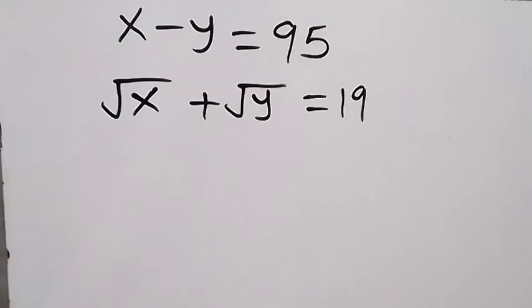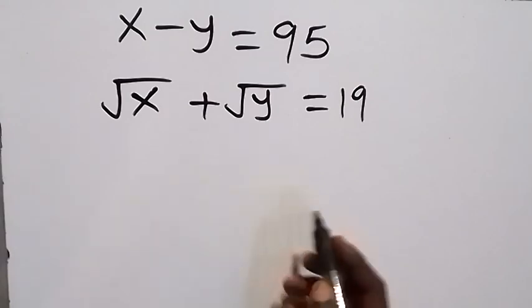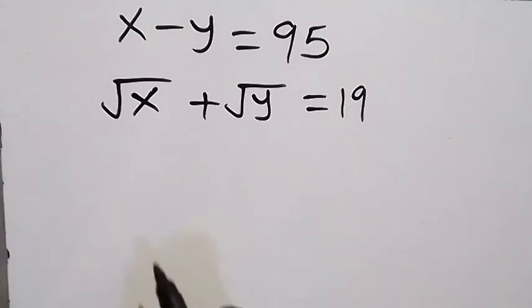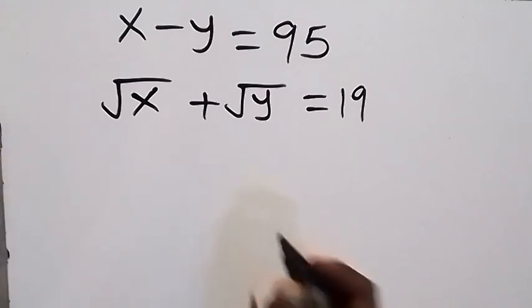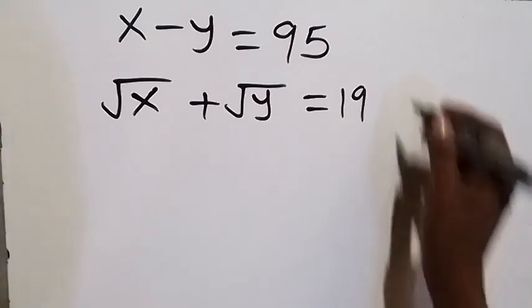Hello. How to solve this problem: x minus y equals 95, and root x plus root y equals 19.